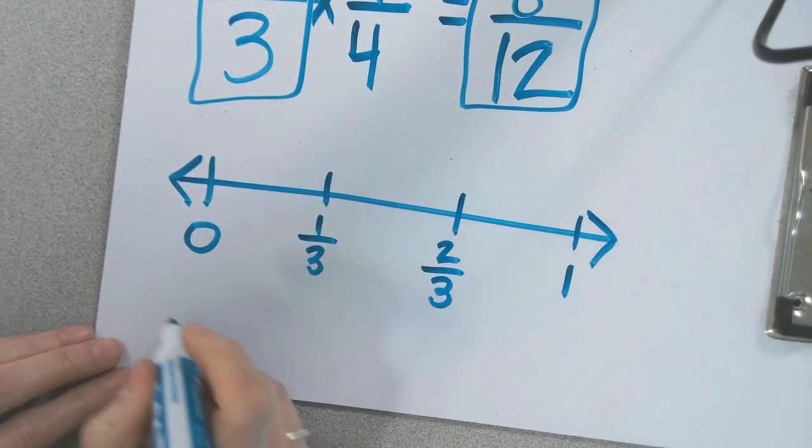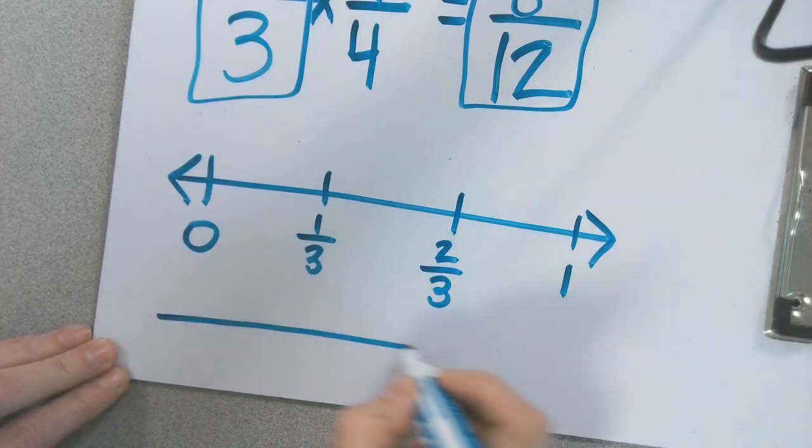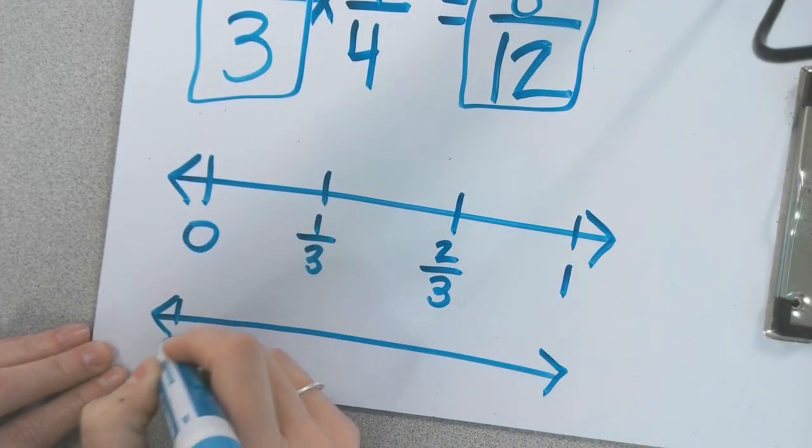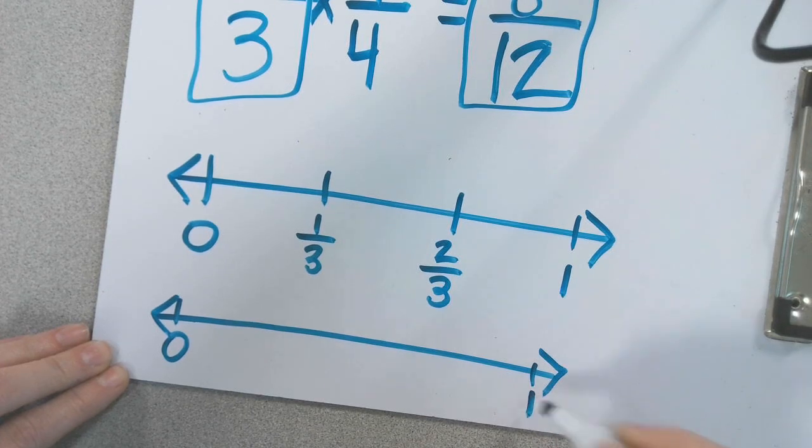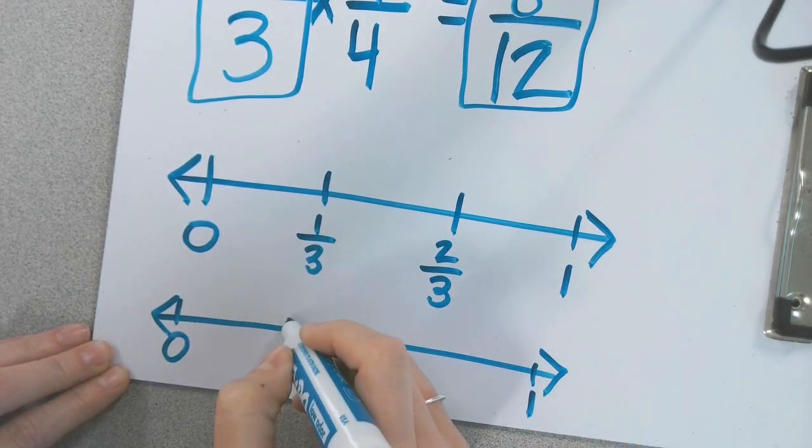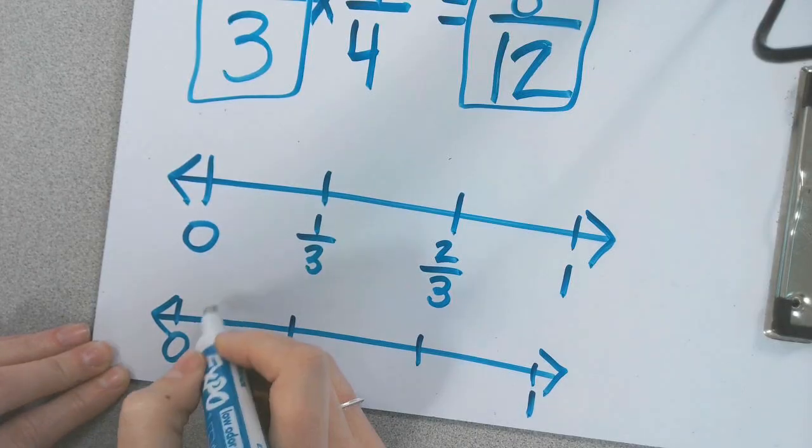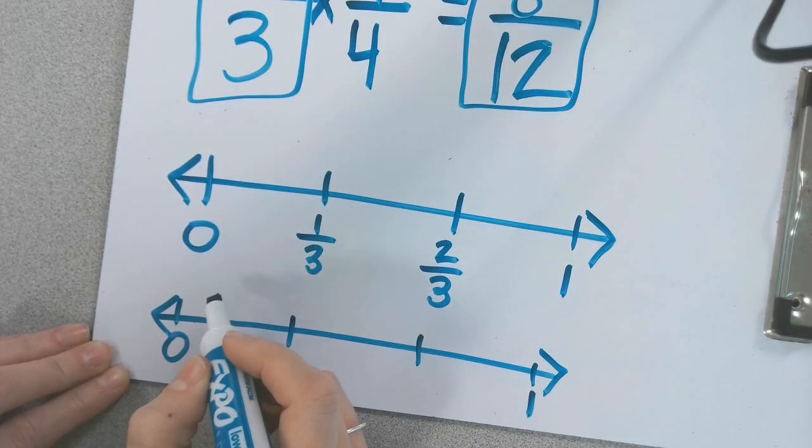Then I'm going to make the same size number line. But this one, I'm going to divide into how many parts? Twelfths. So I'm going to hit my thirds first. How many twelfths are in 1 third, did we say? 4.